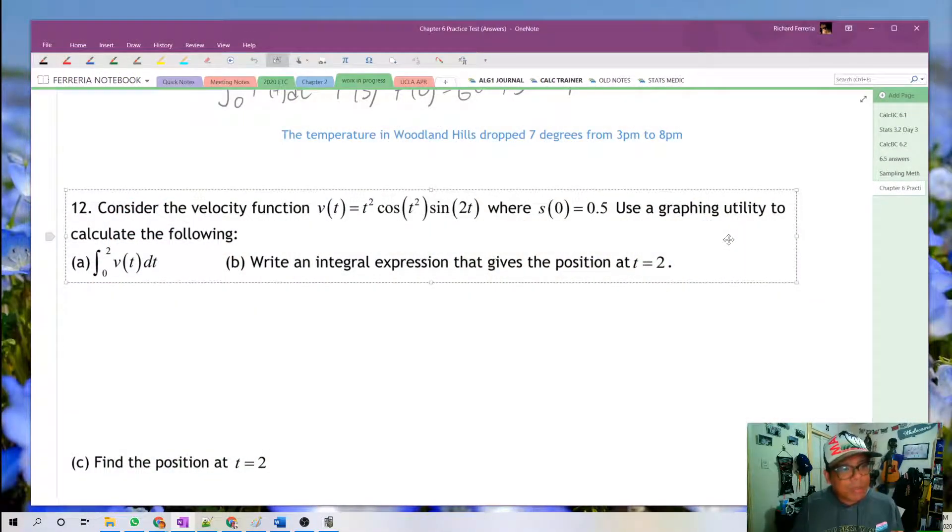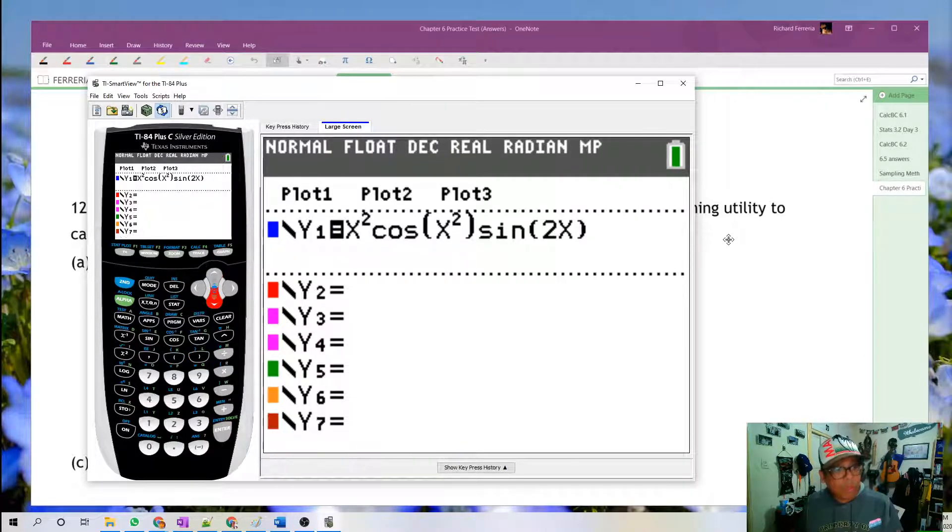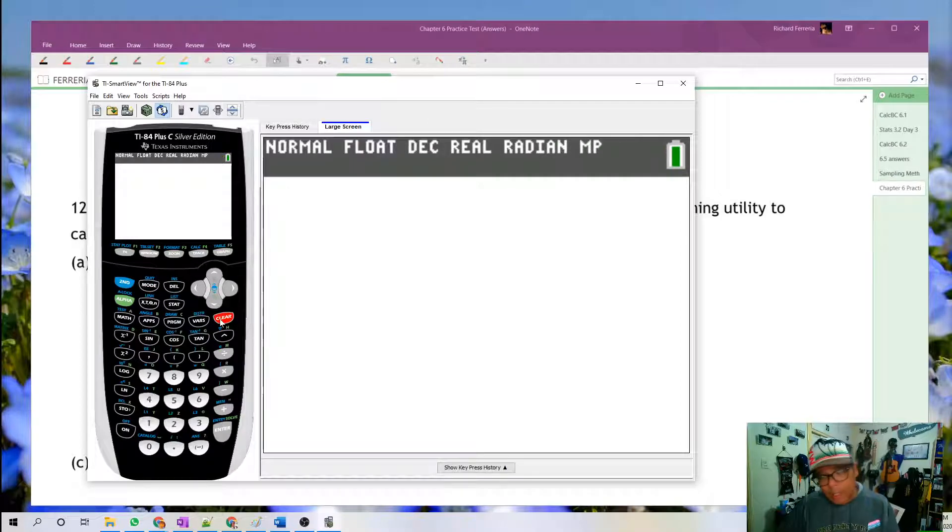So we're going to consider the velocity function v(t) equals t squared, cosine of t squared, sine of 2t, where the position at 0 is equal to 0.5. So we're going to use a graphing calculator to do the following. Well, the first part's pretty easy. I'm going to take out the calculator here, and as you can see, I have already put the function into y1. So I'm going to go back to the home screen, push clear a couple times because I like a clean workspace, and I'm going to integrate.